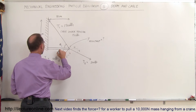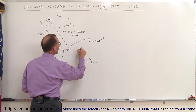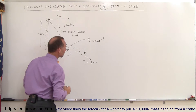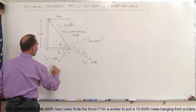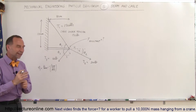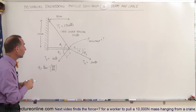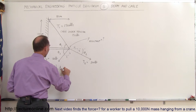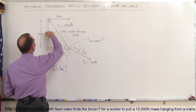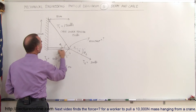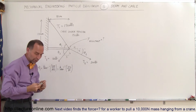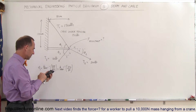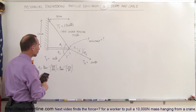Let's find theta 3 over here, and theta 2 right here. Theta 1 equals the arctangent of the opposite side divided by the adjacent side. The opposite side is 120 centimeters and the adjacent side is 80 centimeters, so it's the ratio 120 over 80. The arctangent of 12 divided by 8 equals 56.3 degrees.